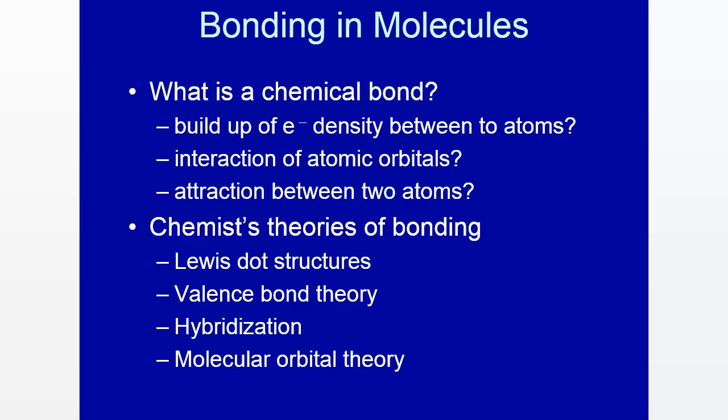When we first started talking about quantum mechanics, we started with some model systems like particle in a box and rigid rotator, and then we worked our way up to the hydrogen atom. Going on further from that, for the helium atom, we found that the Schrödinger equation could not be solved exactly for the helium atom or for any other system which contained more than one electron. Now we're going to talk not about atoms but molecules, and we're going to apply quantum mechanics to describe bonding in molecules. But before we do that, let's see what we know already about bonding in molecules.